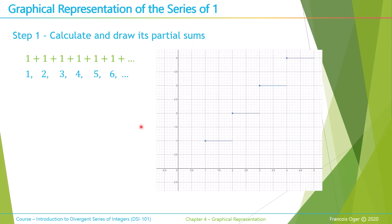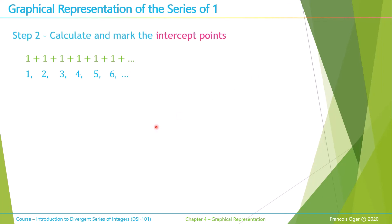Let's have a look graphically. The graphical representation is like a staircase — a floor function, we call it. At 1 we have 1, at 2 we have 2, 3 equals 3, at 4 we have 4, etc. And then we extend those lines until the next integer, like we have done on the whiteboard. The next step is to calculate and mark the intercept points — relatively easy. Two consecutive partial sums: 0 plus 1 equal 1, divided by 2 is one half. 1 plus 2 equals 3, divided by 2 is 3 half. 2 plus 3 equals 5, divided by 2 is 5 half, etc.